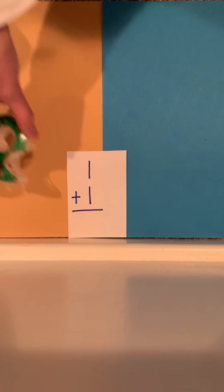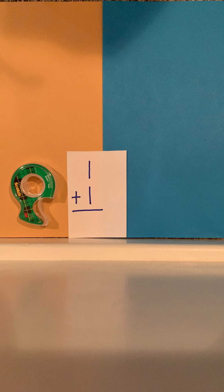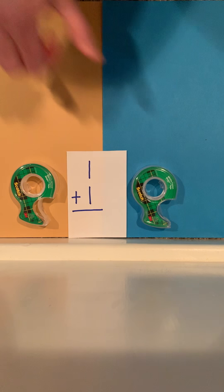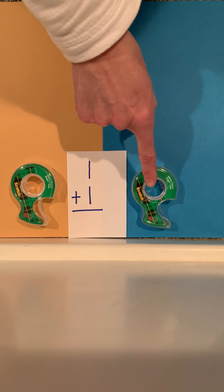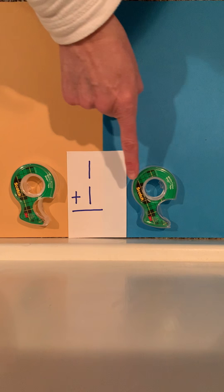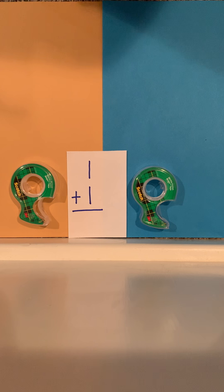So now we're going to look at what 1 plus 1 looks like. If I take one roll of tape and then another roll of tape, how many tape rolls do I have all together? Your answer should be 2. 1, 2. There's 1 here on this side, 1 here on that side.